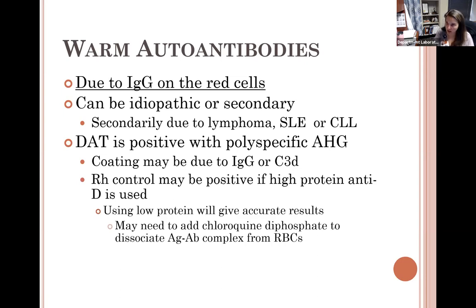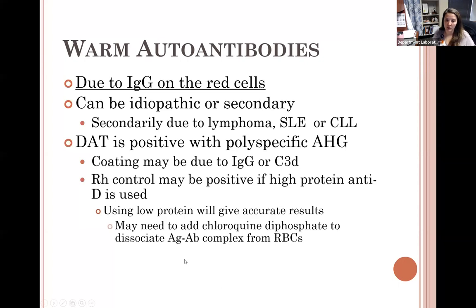The DAT will be positive with polyspecific AHG, and the coating may be due to IgG and/or complement. It is very common with warm autoantibodies that the DAT is positive with polyspecific AHG, monospecific IgG, and monospecific C3b/C3d. If using a high-protein anti-D for RH testing, the RH control may also be positive — though most places no longer use high protein due to increased false positives.